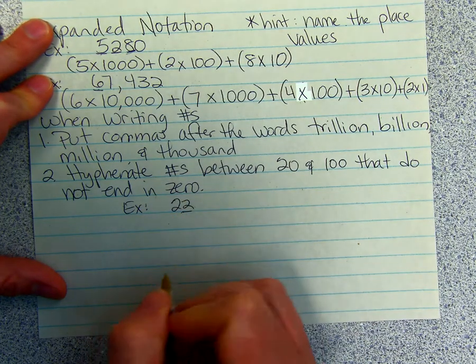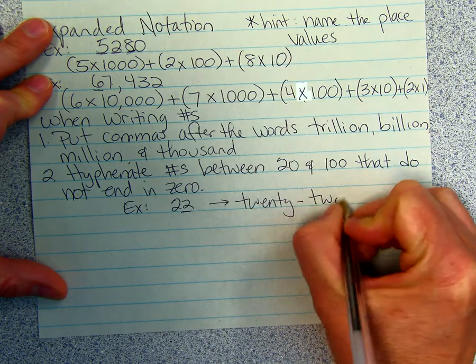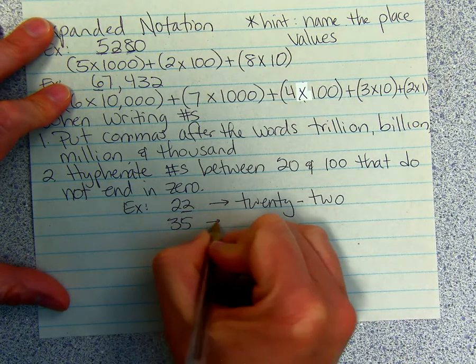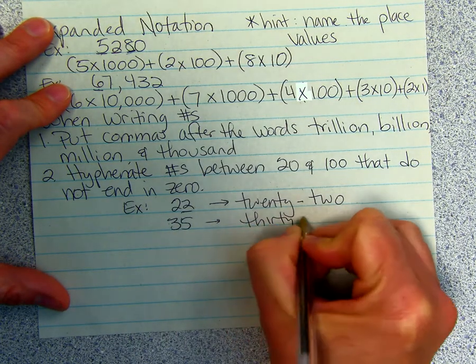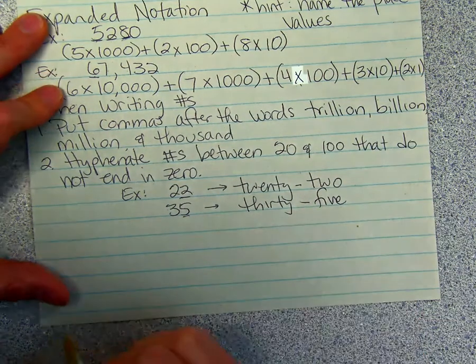When you write the number 22, you have to put a hyphen in between it. 22 does not end in a 0. To write it, it would be 20 hyphen 2. 35 would be 30 hyphen 5. These do not end in 0, so you're going to put a hyphen there.